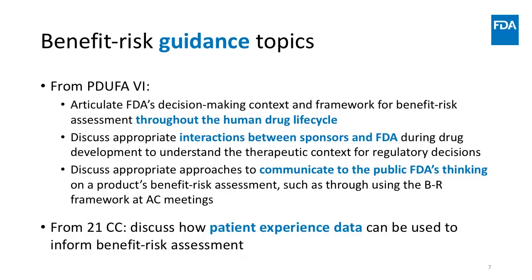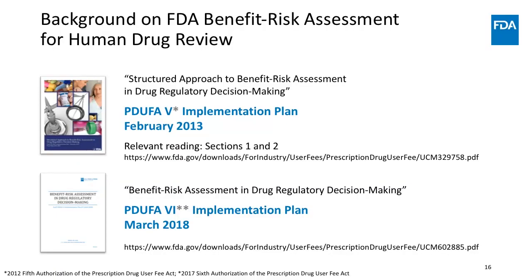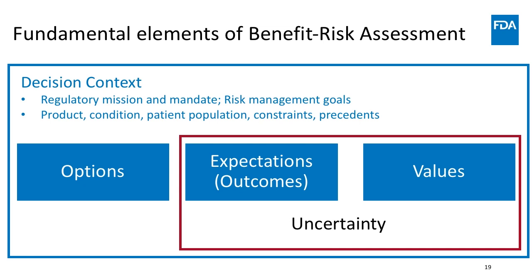At the same time we're carrying out these commitments in the user fee program, any choice that's made — about approval, complete response, post-marketing requirements, risk management — comes with expectations of what will happen. So we think about the outcomes and how we care about those outcomes. Values and trade-offs are the key concepts. Combining those things is really the benefit-risk, but it must be in the context of decision-making. In FDA's context, we have a regulatory mission and mandate, risk management goals, and public health goals, along with context about the product, the patient population, and the condition being treated.